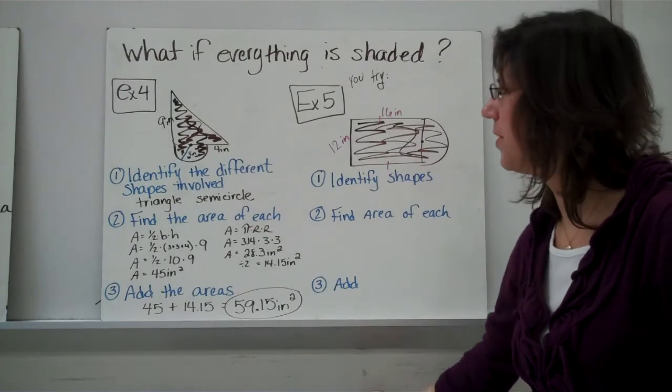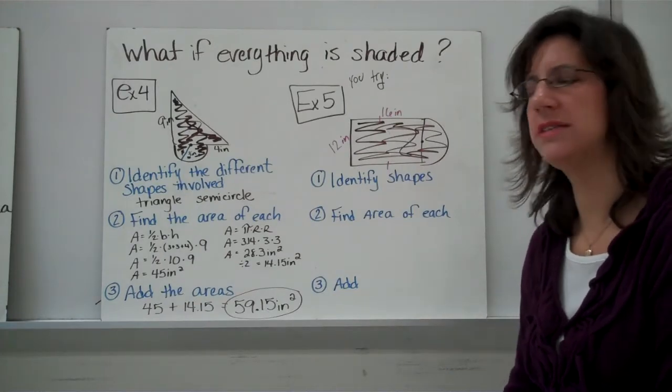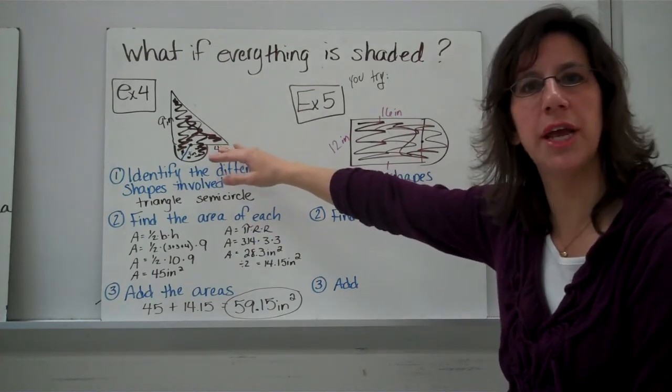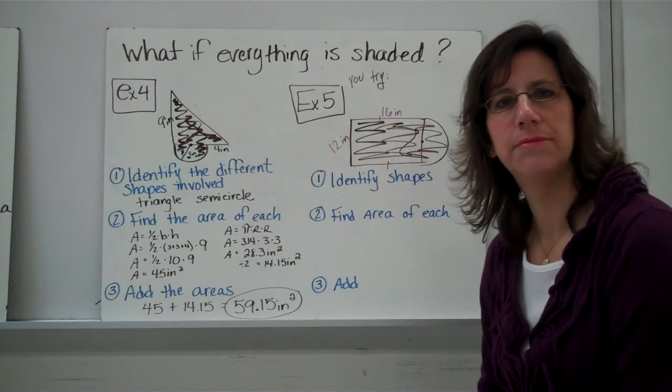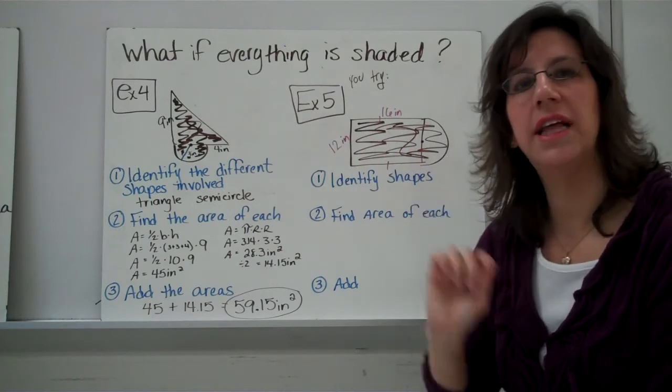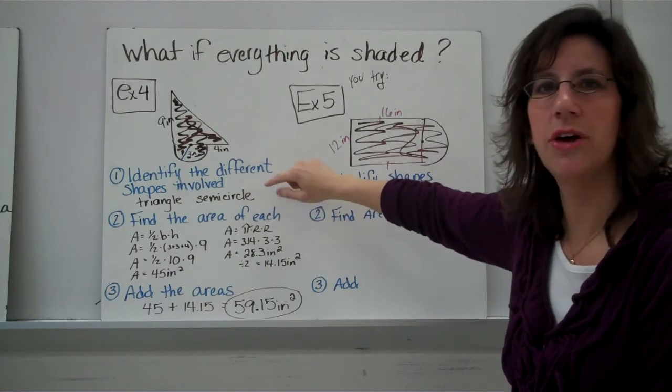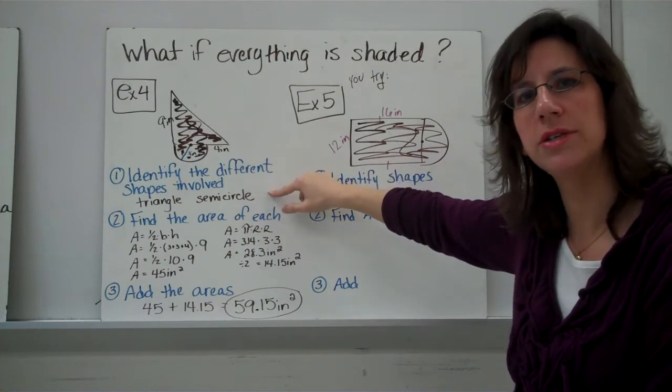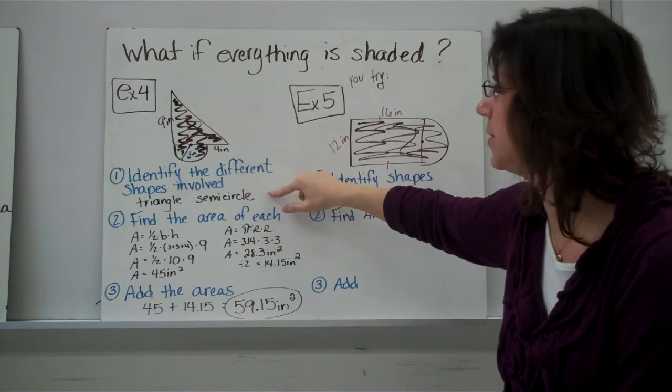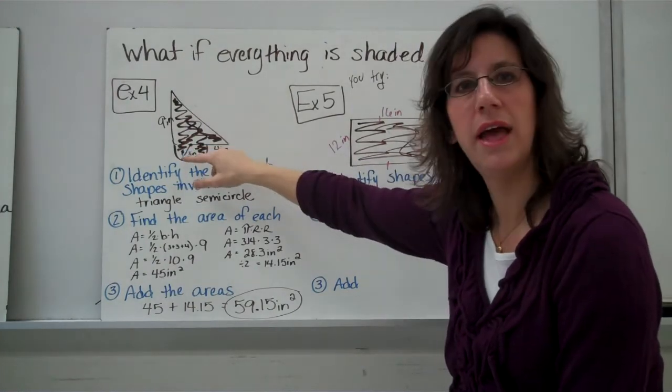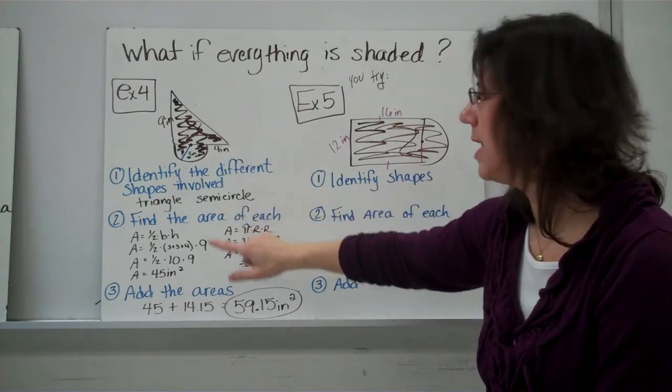Another type of example that you might be given is where everything is shaded. This is still a composite figure because we still have multiple shapes being put together here. But, everything is shaded. There's a very, very slight difference to this question. And, maybe you can guess. The steps are, first figure out, what are the different parts that are being used? What different shapes are included in that composite figure? Here, we have a triangle and a half a circle.